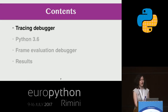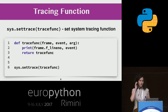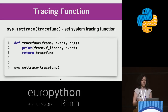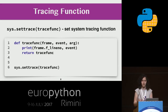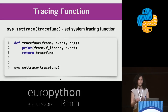Let's start with the tracing debugger. It's named tracing because of the tracing function. Python provides a standard way to set a system tracing function. It takes three arguments: frame, event, and arg. The frame object contains information about the current state of the program. Event is a string representing the event which occurred in the program, and arg is the argument of this event. Let's define a very simple tracing function that prints the line number under execution and the event which arrived.